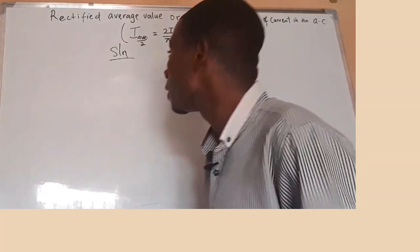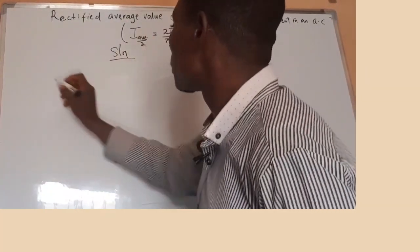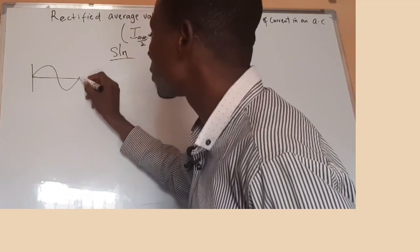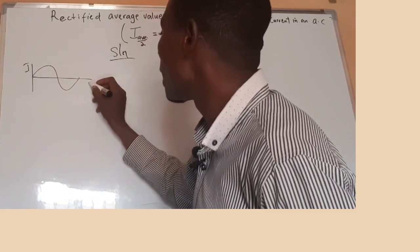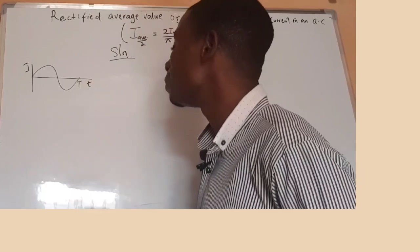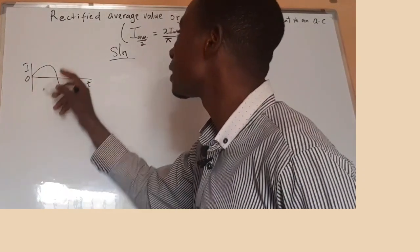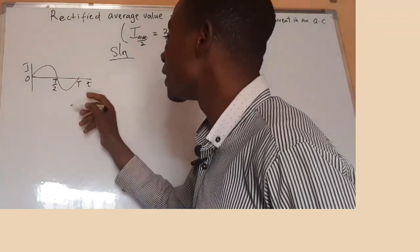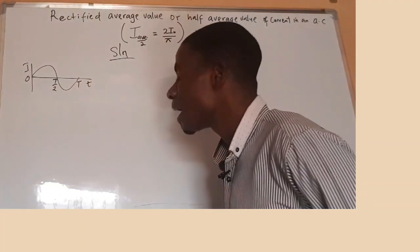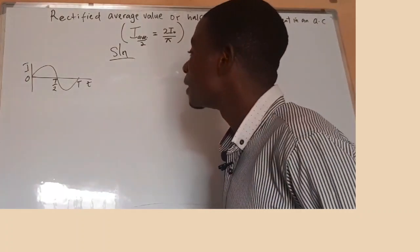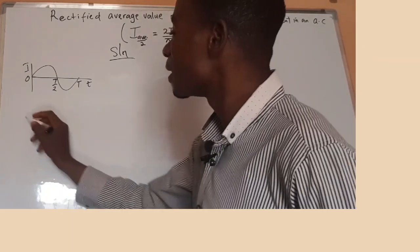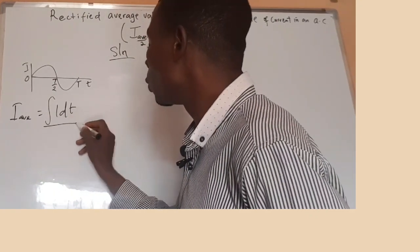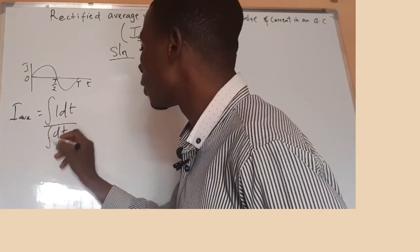Let's see how we can solve this. The first thing is we must consider, for a complete one cycle, a graph of current against time. This is the period — one complete period. But today we're looking at half of it, so it should be T over two — that is half of the complete period. In my previous video I talked about the average value, saying that average value is equal to the integral of I dt all over the integral of dt.